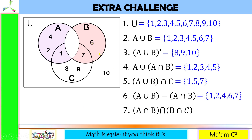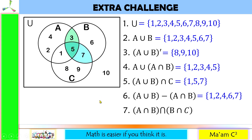Number 7: (A intersection B) intersection (B intersection C). First, the common elements of A and B are 3 and 5. Then the common elements of B and C are 5 and 7. The intersection of these two results — {3, 5} and {5, 7} — is 5. So the answer is {5}.